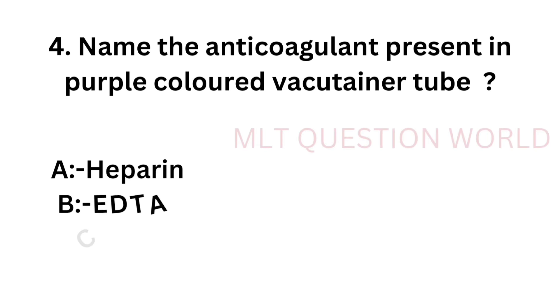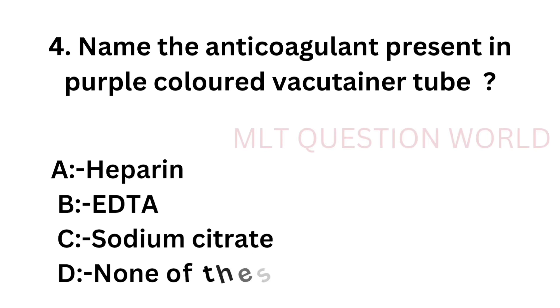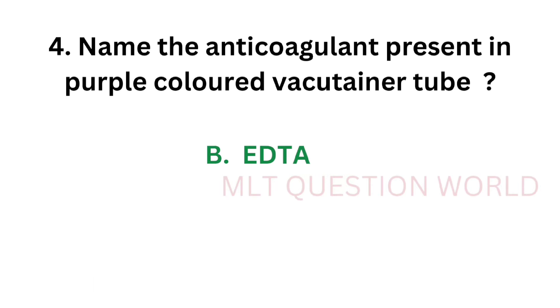Question number 4: Name the anti-coagulant present in the purple colored vacutainer tube. Option A: Heparin, option B: EDTA, option C: Sodium citrate, option D: None of these. Heparin is present in the green colored vacutainer tube, sodium citrate in blue, and EDTA is present in the purple colored vacutainer tube. So the correct answer is option B, EDTA.